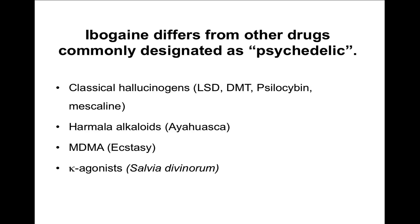The analogy with classical hallucinogens is made on the basis of ibogaine being classified as a hallucinogen, even though its effects differ somewhat. Classical hallucinogens include LSD, DMT, psilocybin, mescaline — agents that bind at a particular receptor. The harmala alkaloids are an element in ayahuasca. MDMA is also classified as a psychedelic, at least according to Rick Doblin. Kappa agonists — salvia divinorum — also get included in the hallucinogen family. These are all theories of ibogaine's mechanism of action that have been suggested at one point or another.